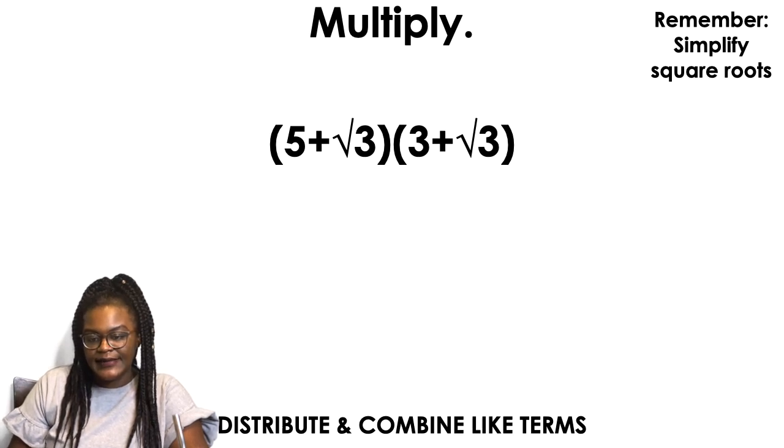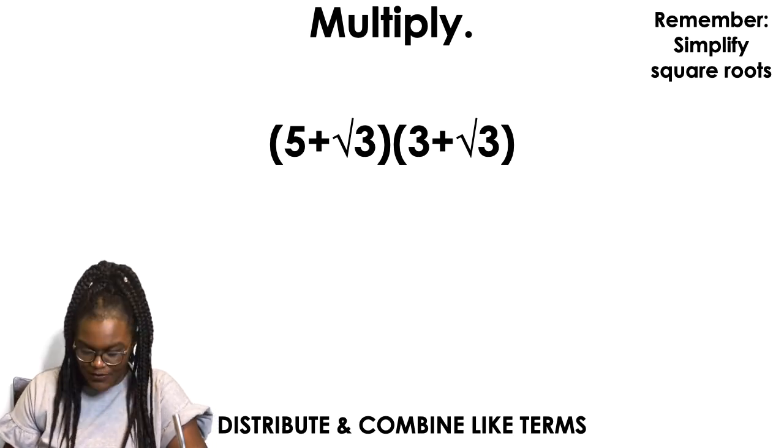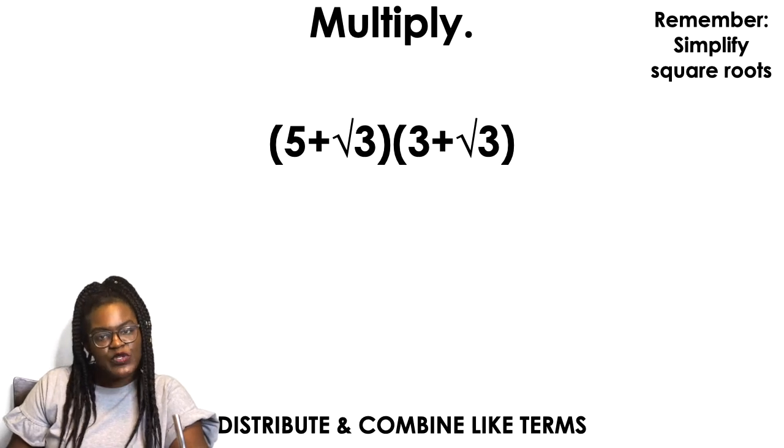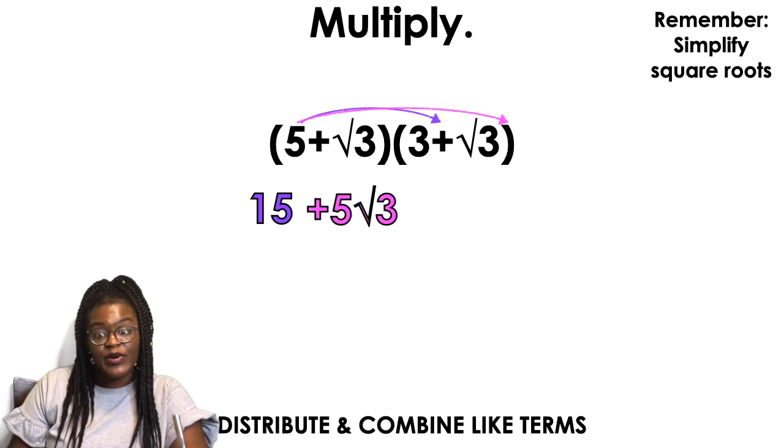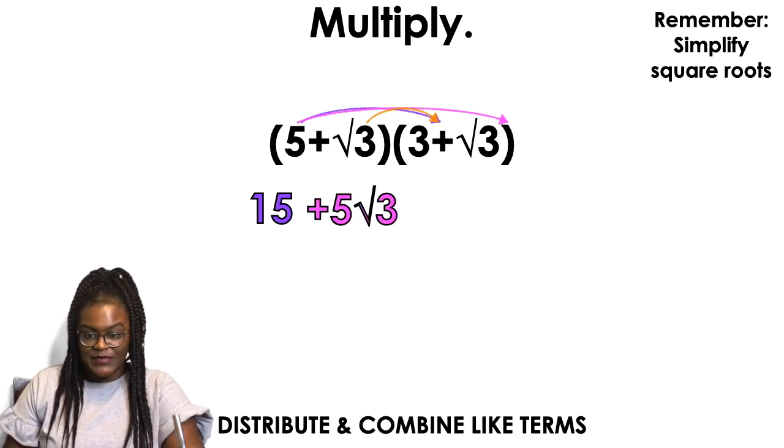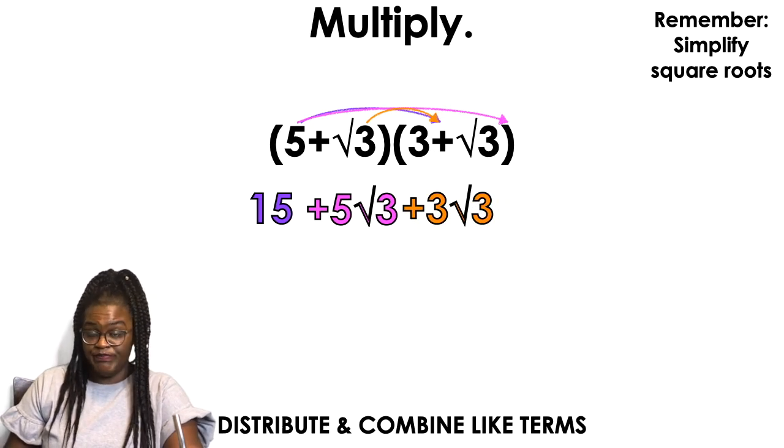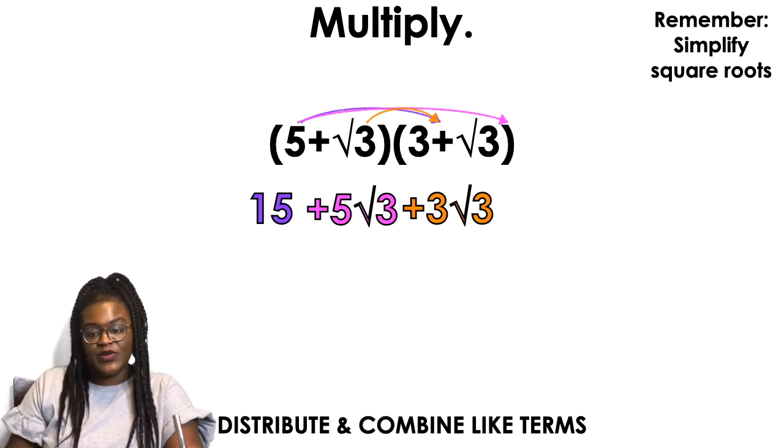Let's see here. Same rules apply, same rules apply, same rules apply, okay? 5 times 3, 15, 5 times square root of 3 is 5 square root of 3. Square root of 3 times 3 is 3 square root of 3, excuse me, and then square root of 3 times square root of 3 is square root of 9.